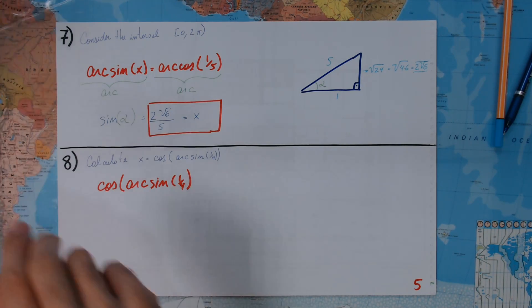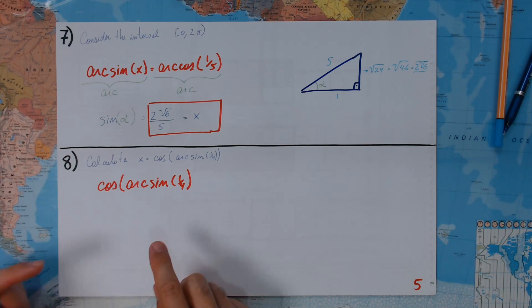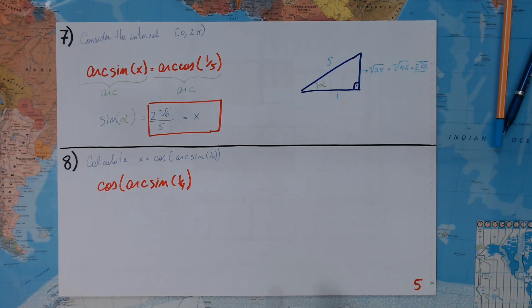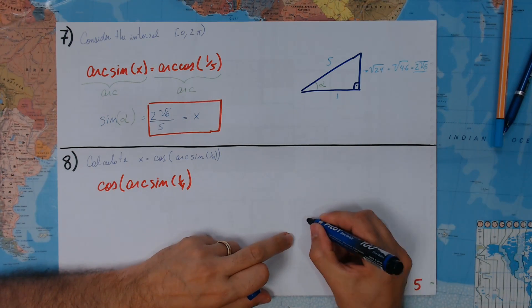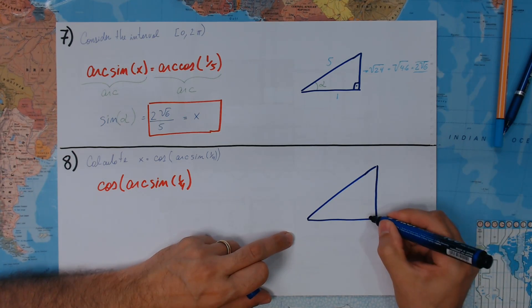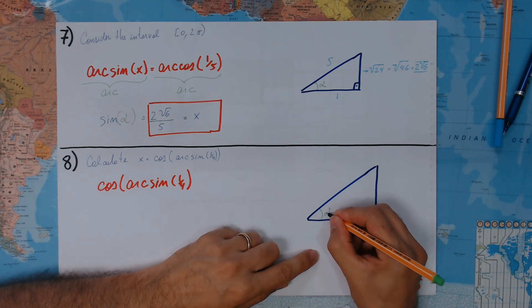Okay, well, what is being asked here? We have to know the cosine for a certain angle which has sine 1/4. Let's build the triangle first. Right triangle. Let's consider this as being our angle, our arc.